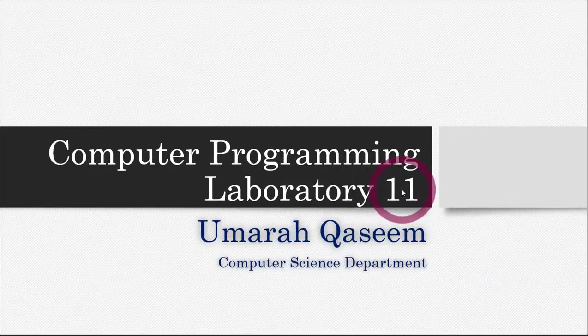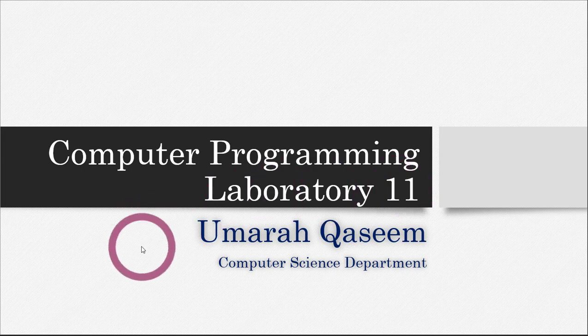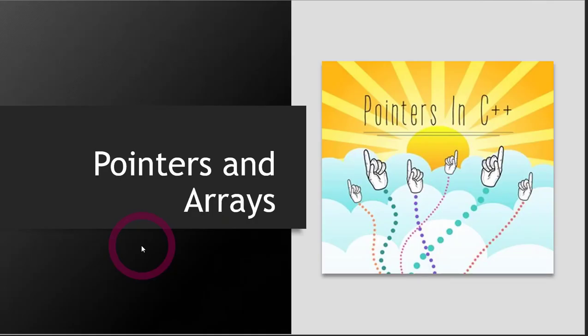Hello everyone, this is the 11th part of the course Computer Programming in C++ and today we will be covering a very important topic which is pointers and arrows. Pointers are considered a little bit tough but actually they are very easy. So let's look at them.